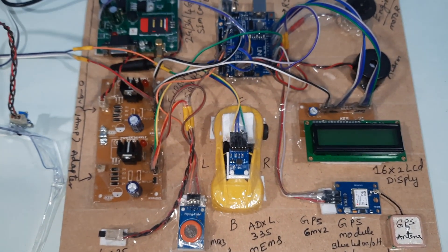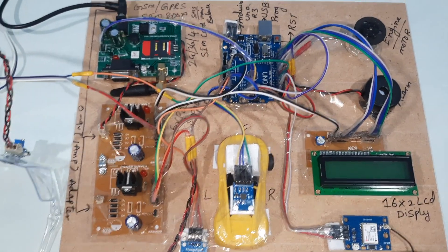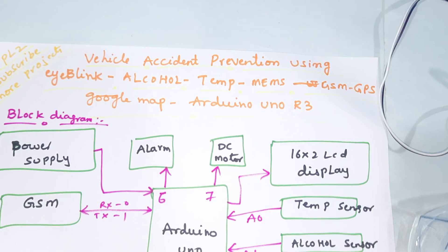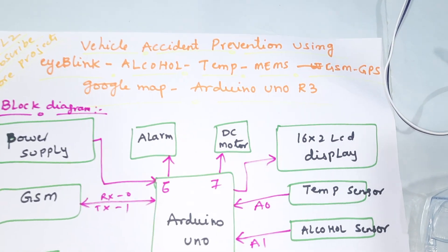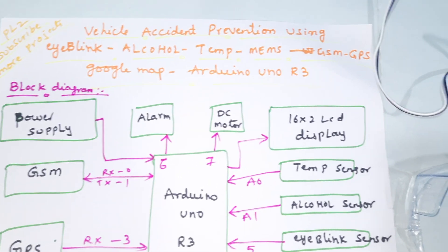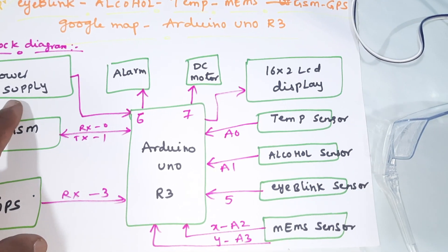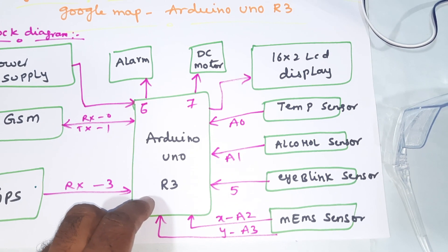Hi, we are from SVS Embedded. The project title is Vehicle Accident Prevention using eye blink, alcohol, temperature, MEMS, GSM, and GPS with Google Map location. Here we are using a 5-volt power supply module and Arduino Uno R3 board.